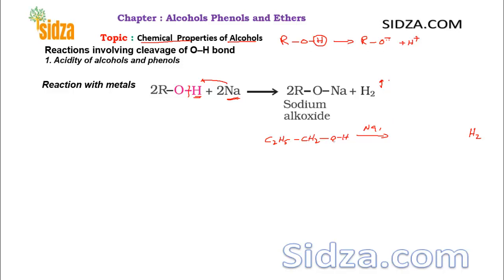The alcohol molecule forms a salt with the sodium, so you get C₂H₅CH₂O⁻ Na⁺ — the sodium salt of the alcohol — and hydrogen gas is produced. When you balance it, two molecules of alcohol produce two hydrogen atoms which form H₂ gas. This is simply because of the acidic nature of the O-H hydrogen.